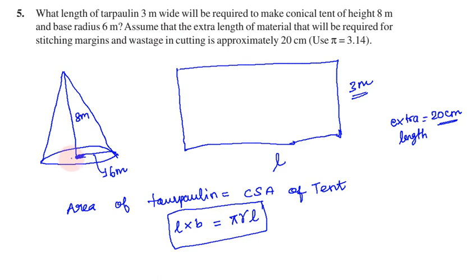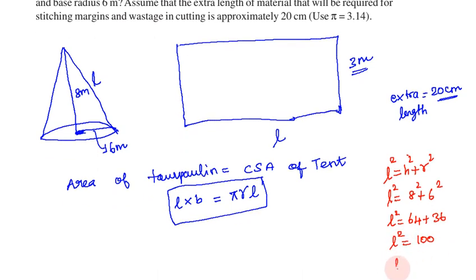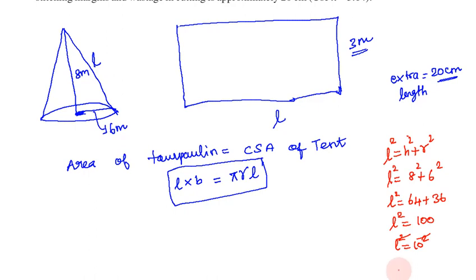Curved surface area is pi R L. Radius and height are known, but slant height L is unknown. So to find L, we have the formula: L square equals h square plus r square. L square equals h square, which is 8 square, and r square is 6 square. So L square equals 64 plus 36, which equals 100. So L equals 10 meters.